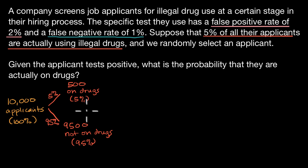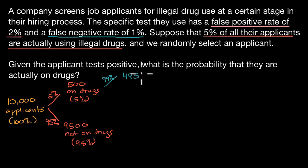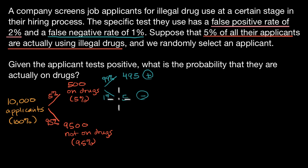Now let's administer the test. What is going to happen when we administer the test to the people who are on drugs? The test ideally would give a positive result for all of them, but it's not a perfect test — it's going to give a negative for some of them, falsely. We know that because it has a false negative rate of one percent. So of these 500, ninety-nine percent are going to get the correct result and test positive — that's 495. And then five, which is one percent, are going to falsely test negative.